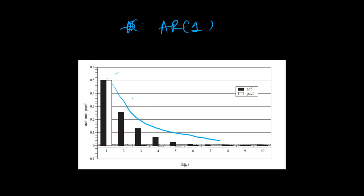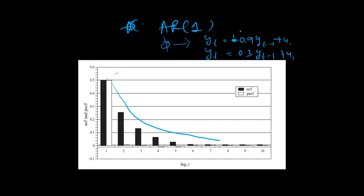The rate of decay determines the value of the coefficients — the phis. In the previous case, the coefficient could be like Yt = 0.9·Y(t−1) + u(t). However, in this case, it's Yt = 0.03·Y(t−1) + u(t). Notice: the previous coefficient is 0.9 while this one is 0.03. Where the coefficient value is less, the ACF will decay much faster. So the rate of decay determines the exact value of the coefficients.